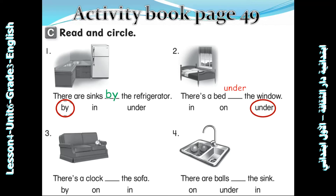Look at number three: There is a clock [space] the sofa — by, on, or under? Number three, the clock is? Well done — on. There is a clock on the sofa.